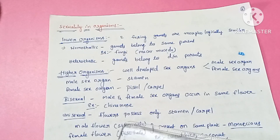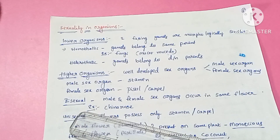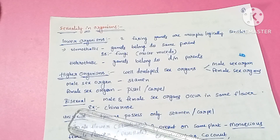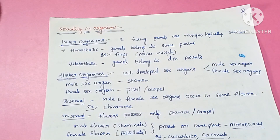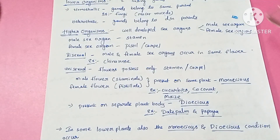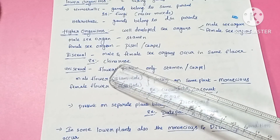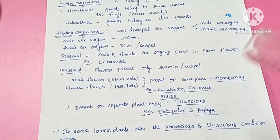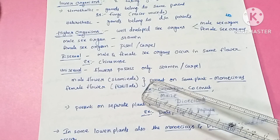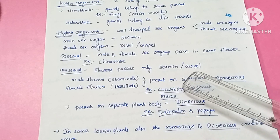If male and female sex organs occur in the same flower, then that plant is called a bisexual plant. That condition is called bisexual. An example of this condition is China rose, which means hibiscus. So the male sex organ and female sex organ are both present in one flower — that is the bisexual condition.